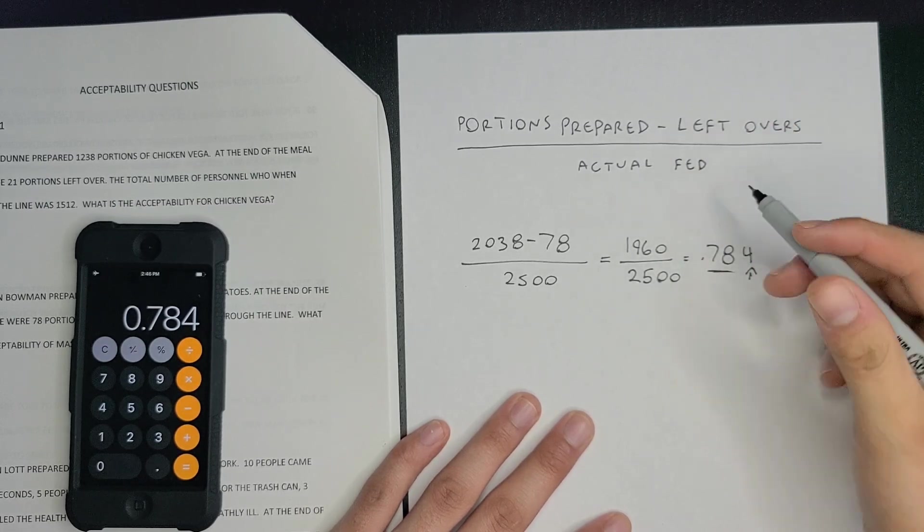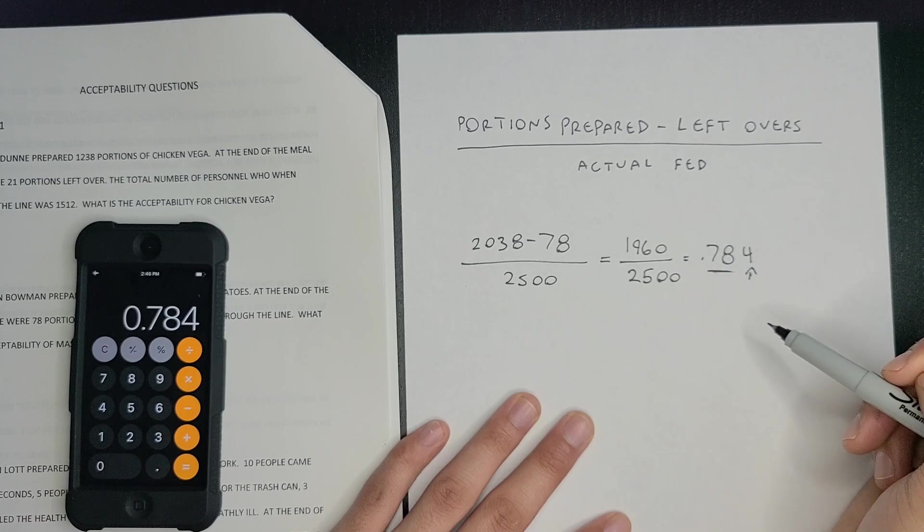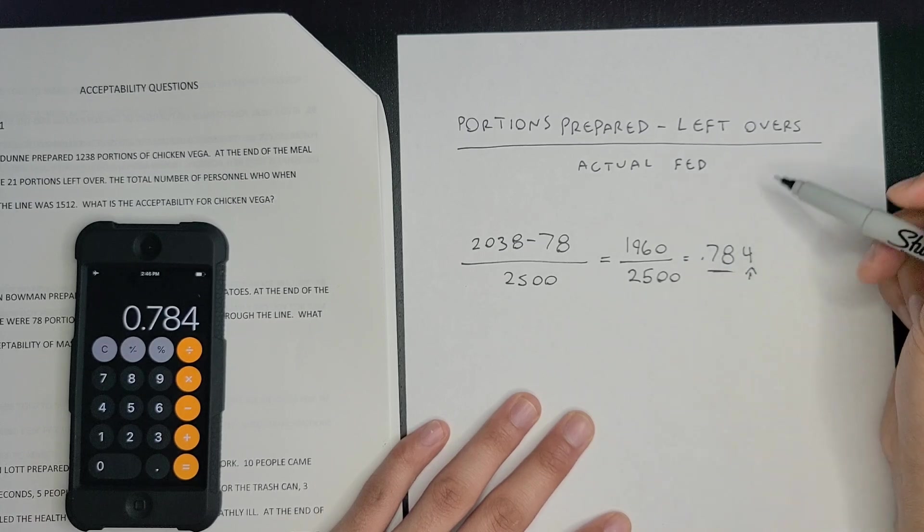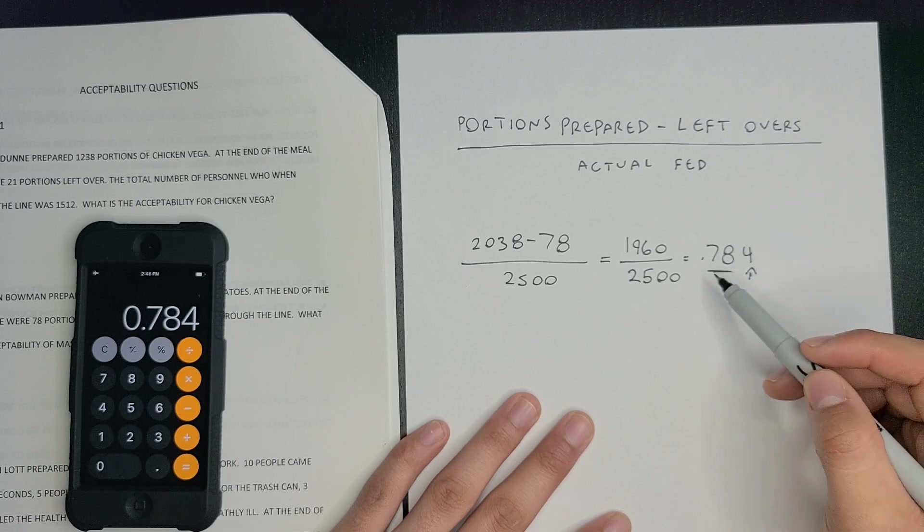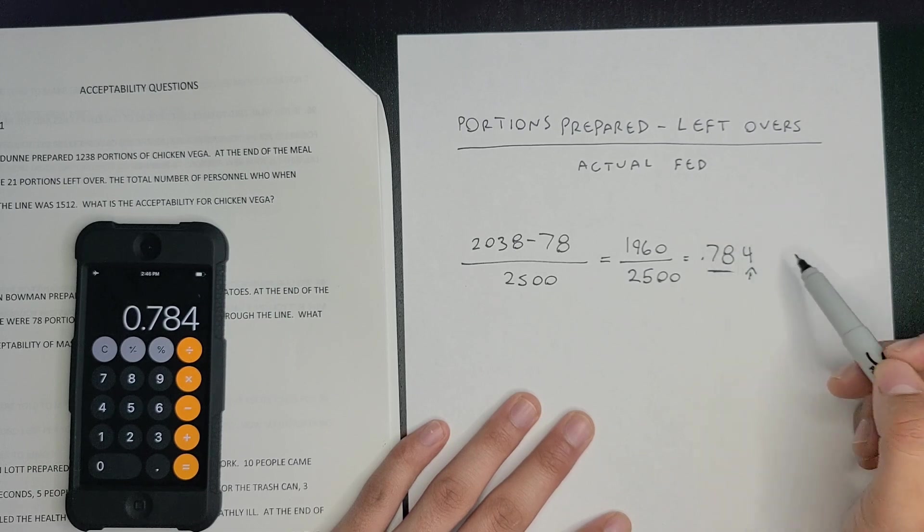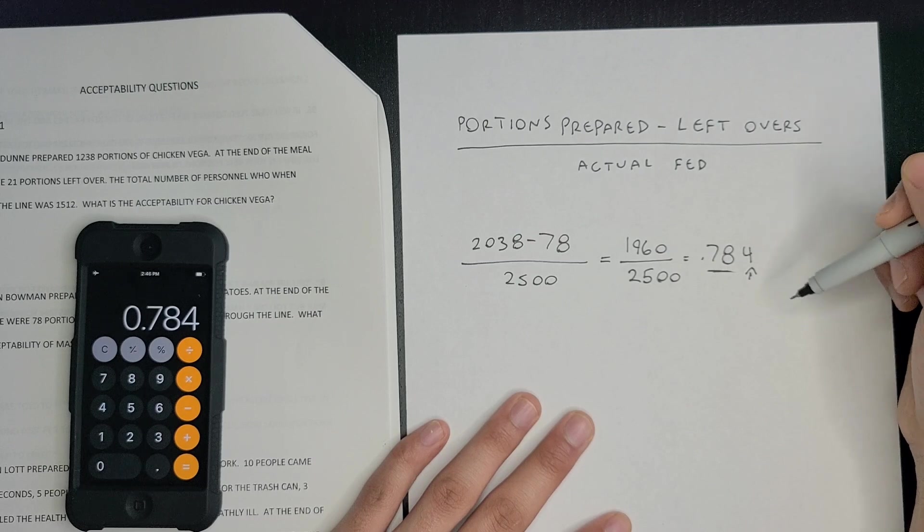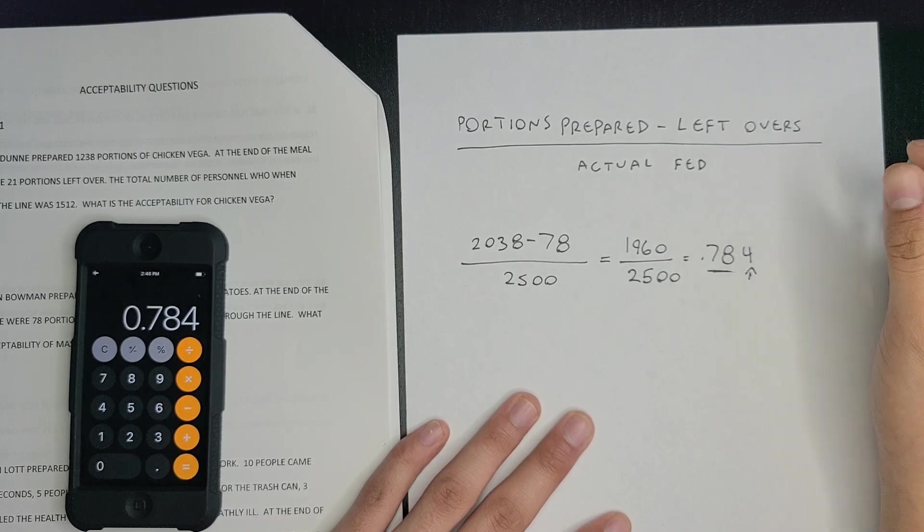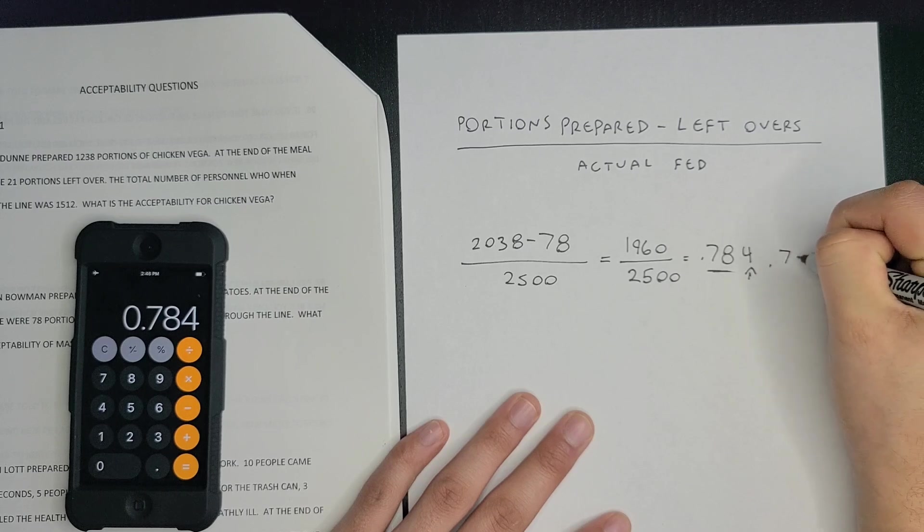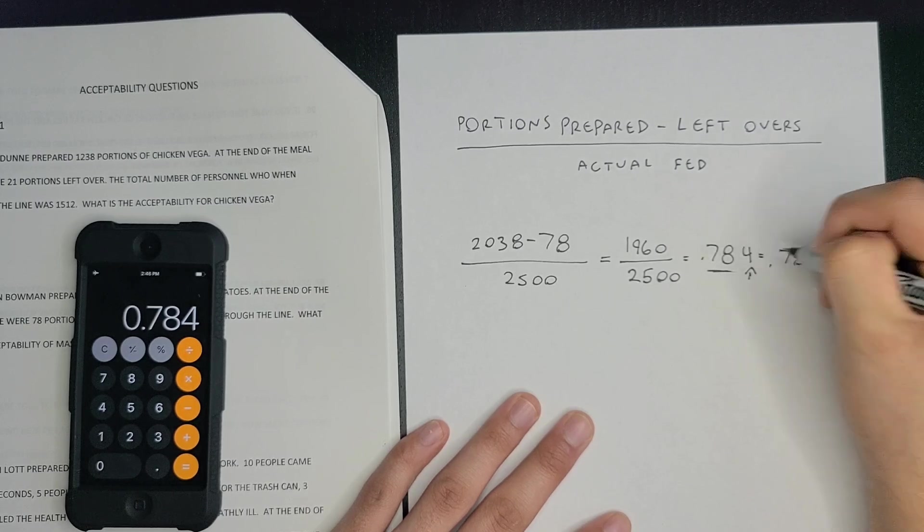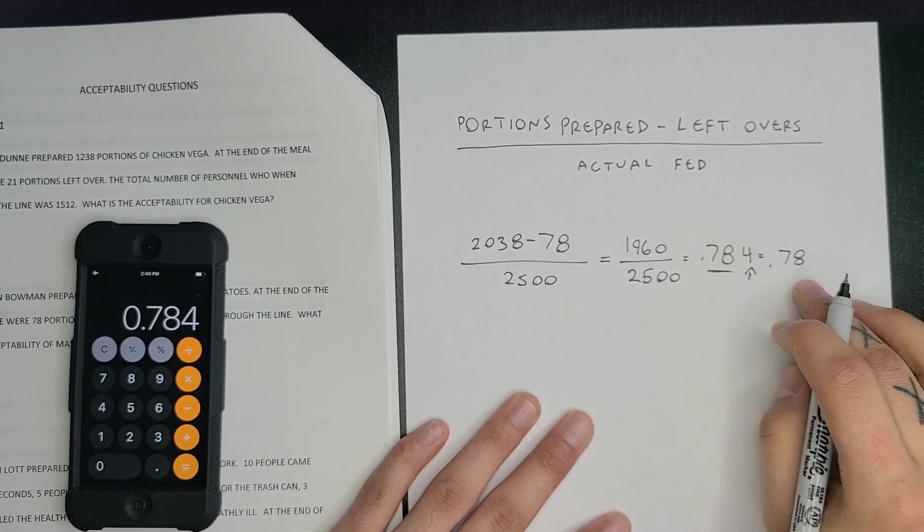or below, you're going to round down, so you leave this number as is. If it's five or above, you round up—so if it was five or above, this would be 0.79. But since it's four or below, it stays at 0.78. Your acceptability